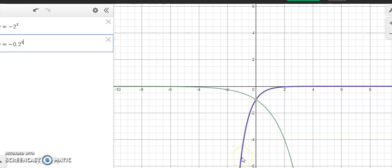Similarly, at negative 0.2 to the x, it starts low and then it flattens out on the right.